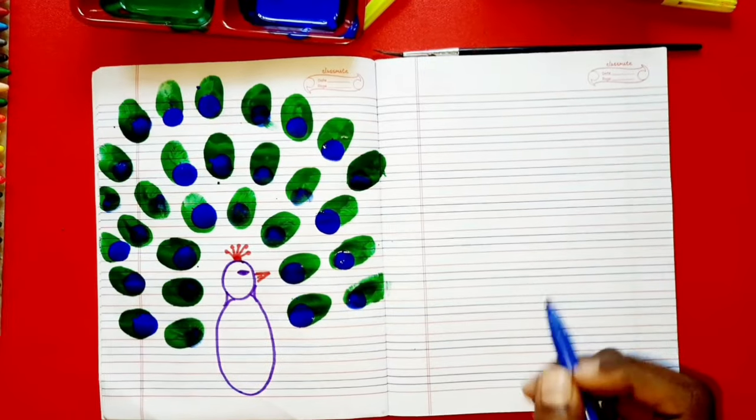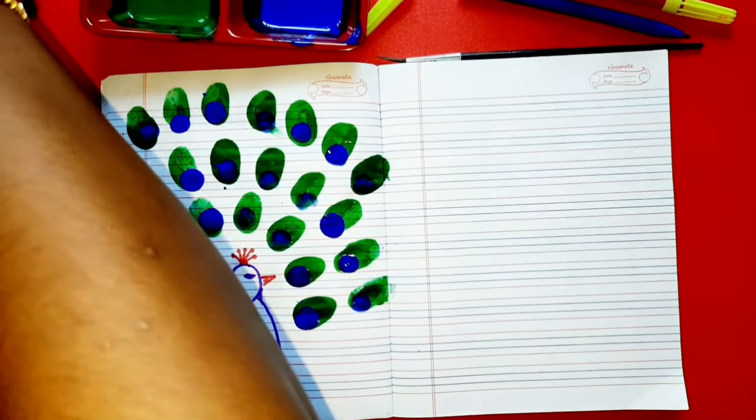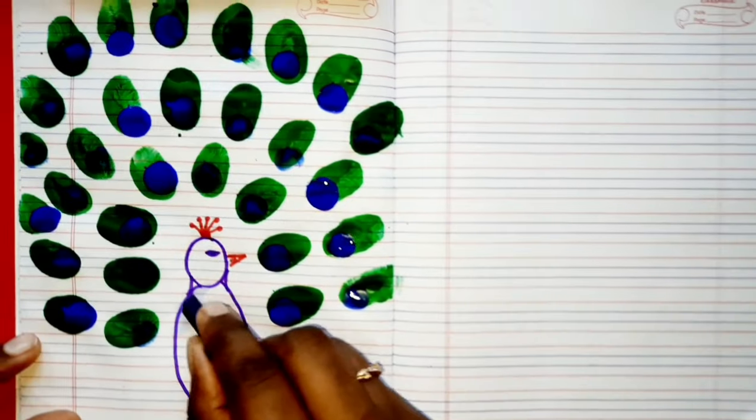Now let's give you some time to dry this blue color. Okay. Meanwhile it is drying let's color this peacock. Okay, we can take the blue color and we can color it blue color and start coloring it.